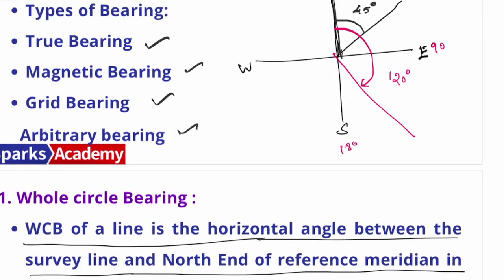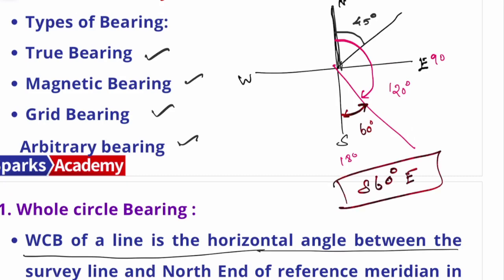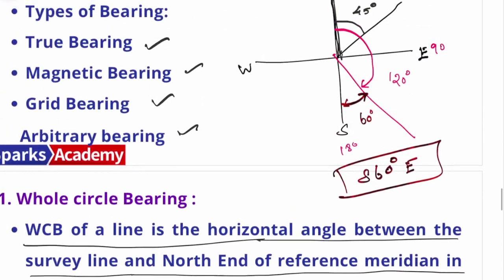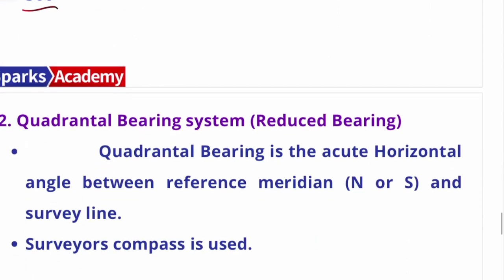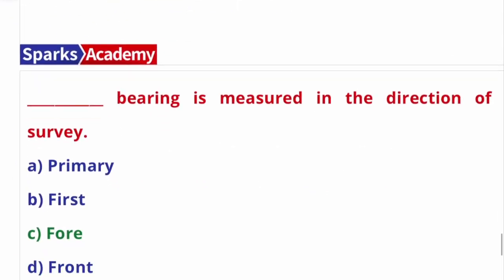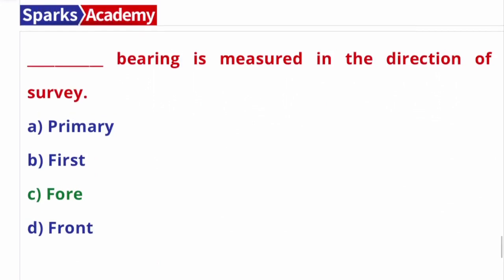For reduced bearing, the bearing is measured from the nearest north or south. For example, if the whole circle bearing is 120 degrees, the reduced bearing would be South 60 degrees East — since 180 minus 120 equals 60. Whole circle bearing ranges from 0 to 360 degrees, while reduced bearing uses a quadrant bearing system. These are the answers to the theory questions discussed in this video.